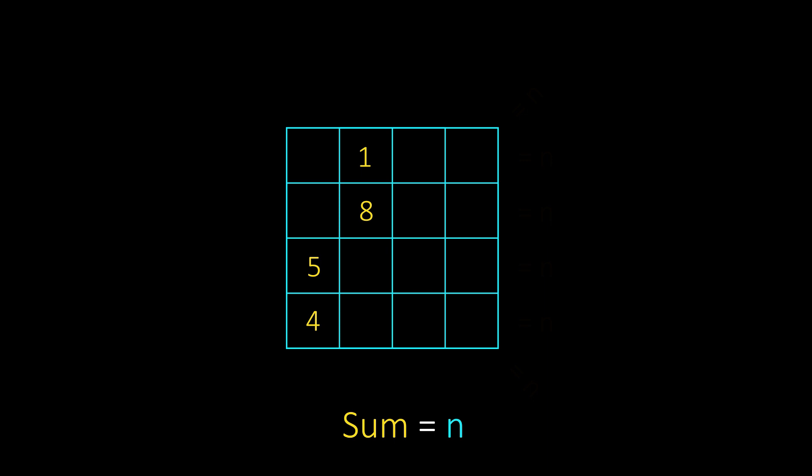Then just write 5, 4, 1, 8, 3, 6 and 7, 2. And these are multiples of 9. Now we write 9, 10, 11, and 12.